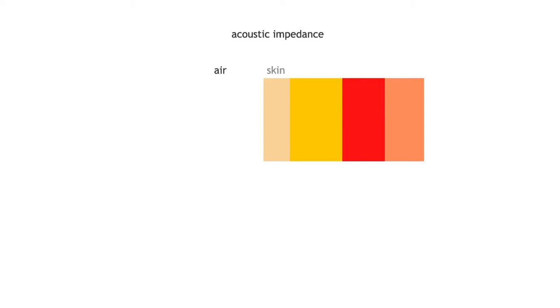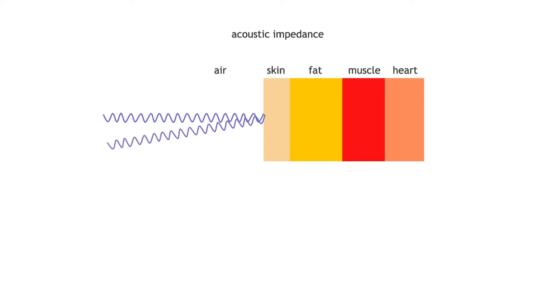Chapter two covers the traveling wave — what happens to the wave as it travels through various media. In a view of the human body, we see air, skin, fat, a muscle layer, and a heart layer. When the incoming ultrasound wave hits the skin, the vast majority of its energy is reflected straight back out due to something called impedance mismatch.